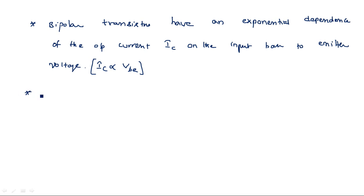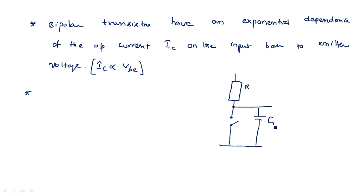The switching performance of a transistor driving a capacitive load can be visualized from a simple model. In this figure, the ON transistor is modeled as a resistor R and an open-circuited transistor, with a high capacitance load CL across the output. VDD is connected through a resistor to the output, and another transistor in the off state is connected between the output and ground. The input is applied to this transistor.